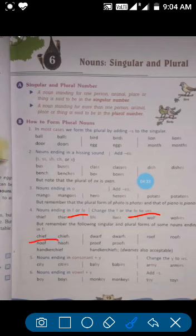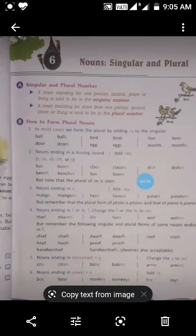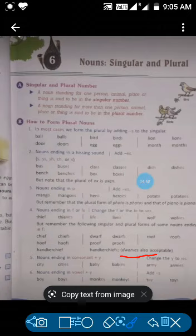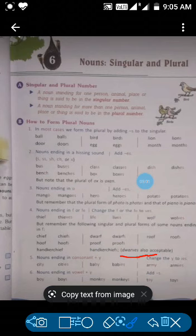For example, chief, roof, proof - all these words end in F. But we don't change the F to VES, we just add S. Dwarf can be written both ways - either add S after F or add VES. Both are acceptable, but it's more suitable to add S.